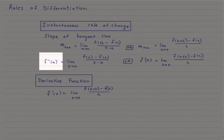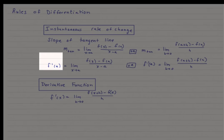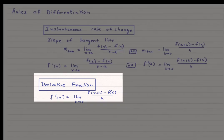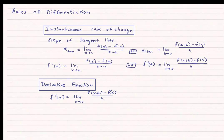We can also call that f prime of a — that is the first derivative at a. We've also talked about the derivative as being a function, so f prime of x equals the limit as h approaches zero of f(x+h) minus f(x) all over h. Well, if we had to do this every single time we found a derivative, I love math but I don't love math that much. So we're going to come up with some general rules that you'll need to memorize.